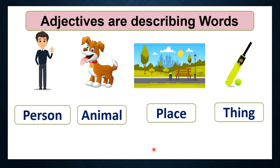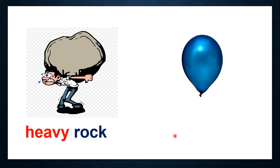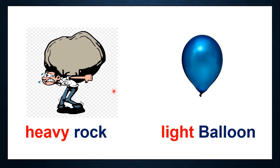Now let's see some more examples. What can we say about this rock? How can we describe it? You can say it's a heavy rock. So we are describing this rock as heavy with the weight. Now what can we say about this balloon? We can describe it as a light balloon. So with the weight of the objects, we are describing them. Heavy, light — these words about weight are also adjectives.